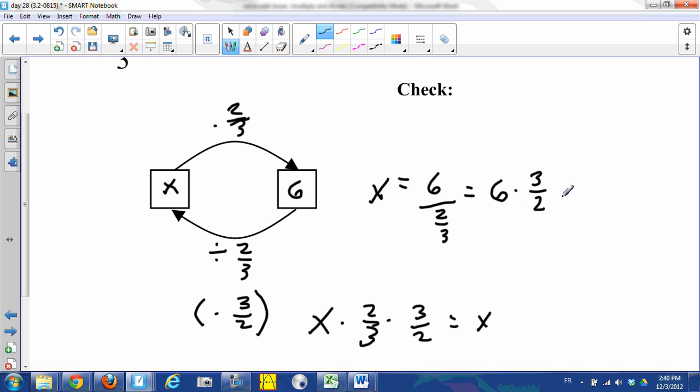Well, I can do this two ways. I can think of this as six times three divided by two, or I can think of six as six ones. Six times three is eighteen, one times two is two, so we've got eighteen halves, and eighteen halves is nine.